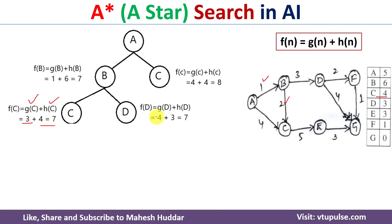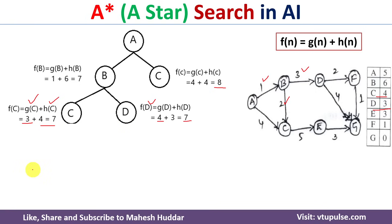For node D: f(D) = g(D) + h(D). g(D) = cost(A→B) + cost(B→D) = 1 + 3 = 4, and h(D) = 3, so f(D) = 4 + 3 = 7. Now among the leaf nodes — C (via B, cost 7), D (cost 7), and C (via A, cost 8) — both f(C via B) and f(D) are equal at 7. We can select either; we select C (via B).